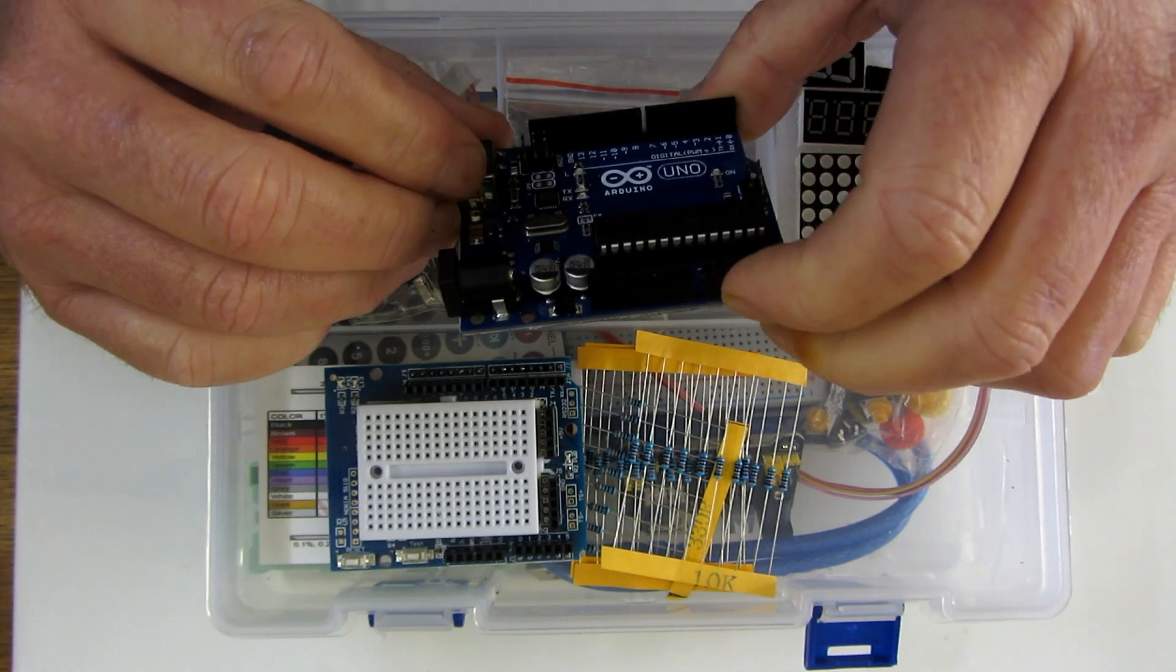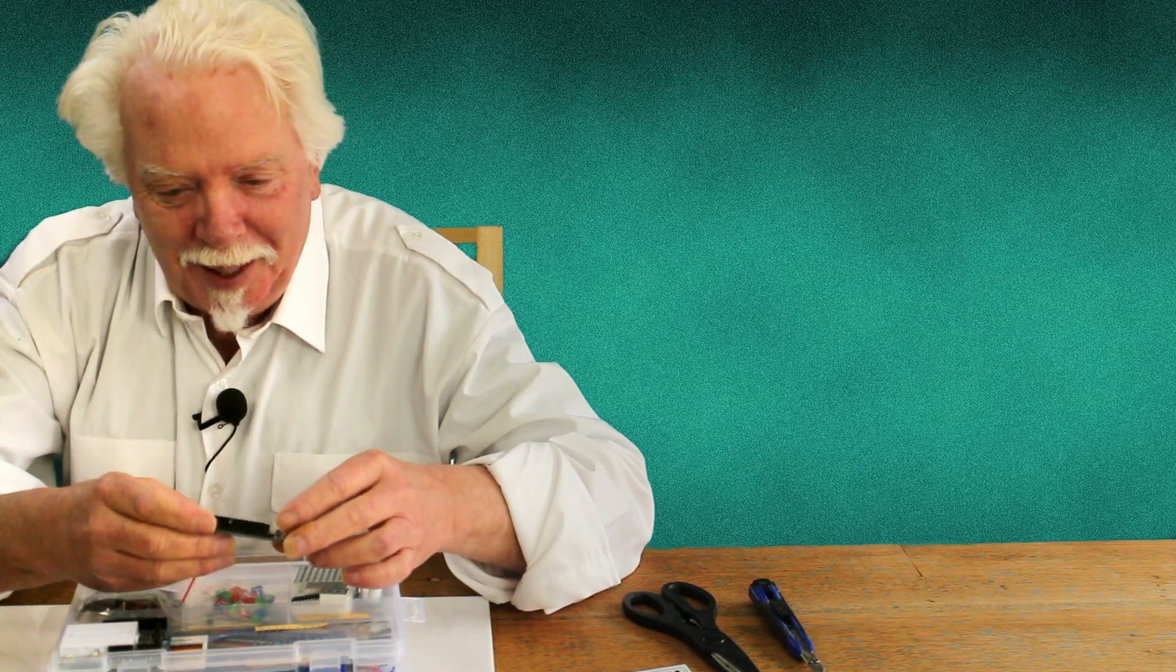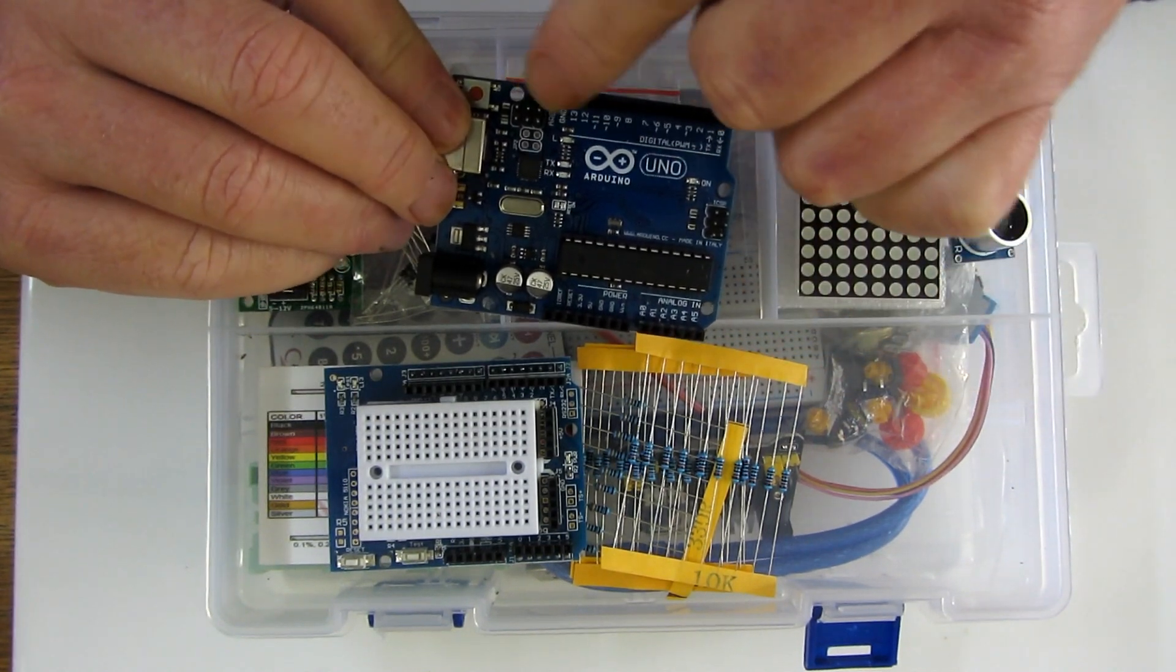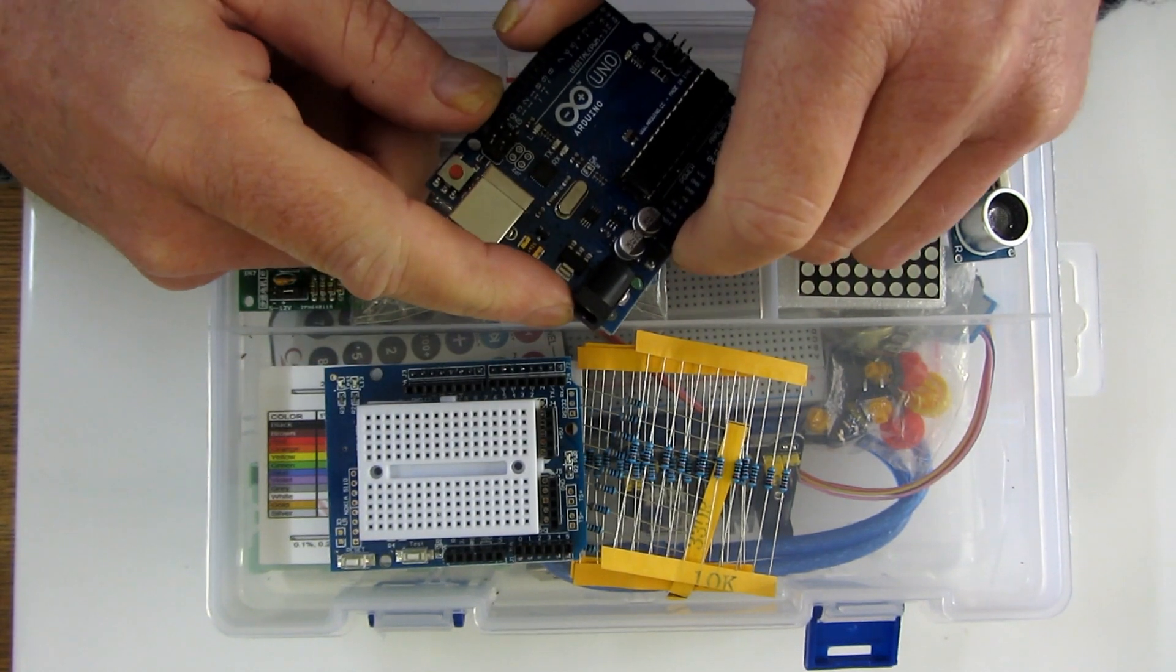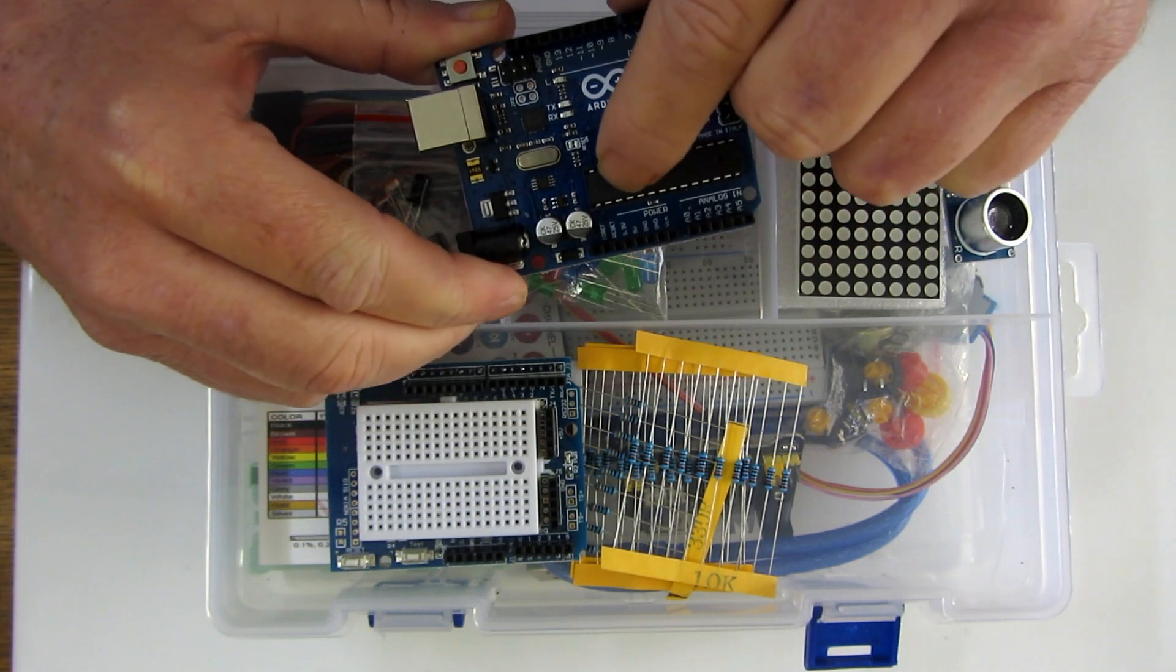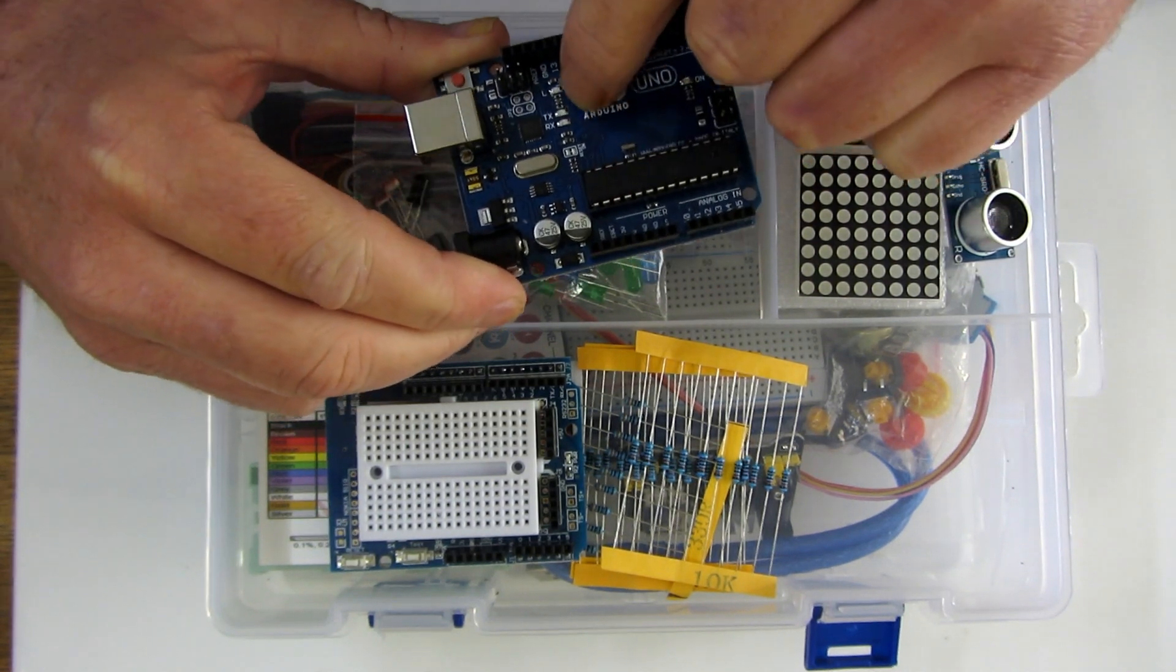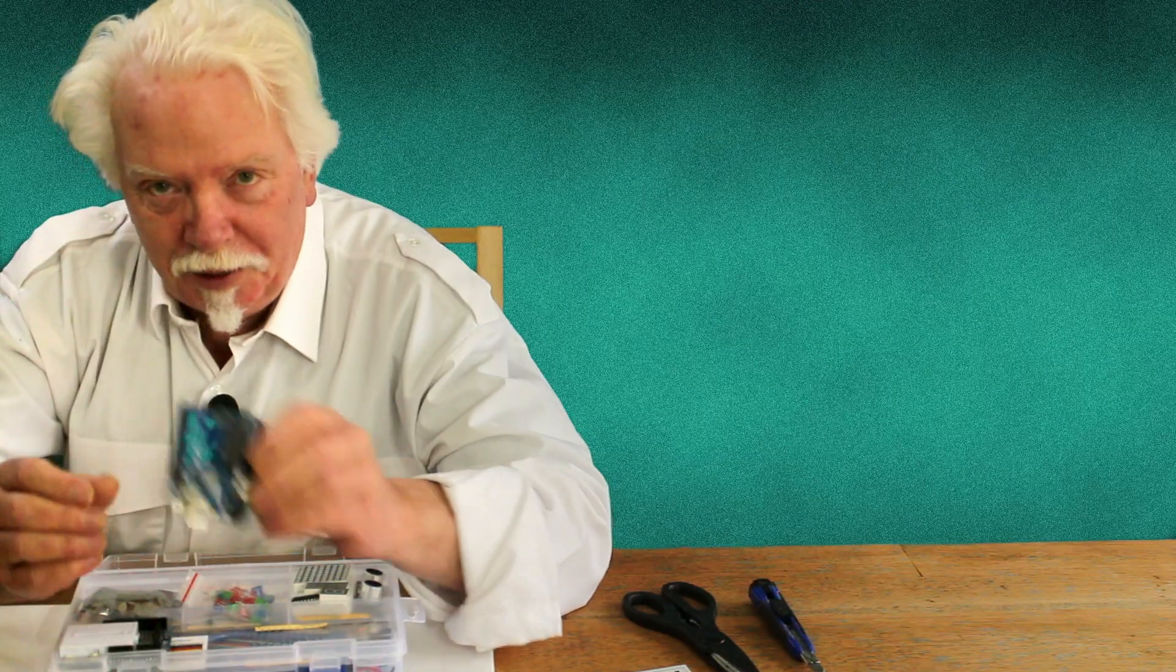It's a microprocessor that is designed for prototyping things, gadgets. Basically, it has lots of input pins and output pins, USB, battery power or mains power through a transformer thing or wall wart as the Americans like to call them. Basically, this is nothing until you program it with something, and then it will do whatever the program tells it to.